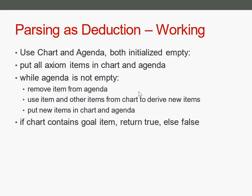Then we apply rules while the agenda is not empty: we pick one item from the agenda and remove it. There can be some variety here — you can always take the oldest item, always the newest item, or choose which item to use — but you pick one and remove it so it won't be used again. Then you use that item with deduction rules to derive new items. If some rules take several items, you combine this item with other items from the chart to get the right number of inputs and derive new items.